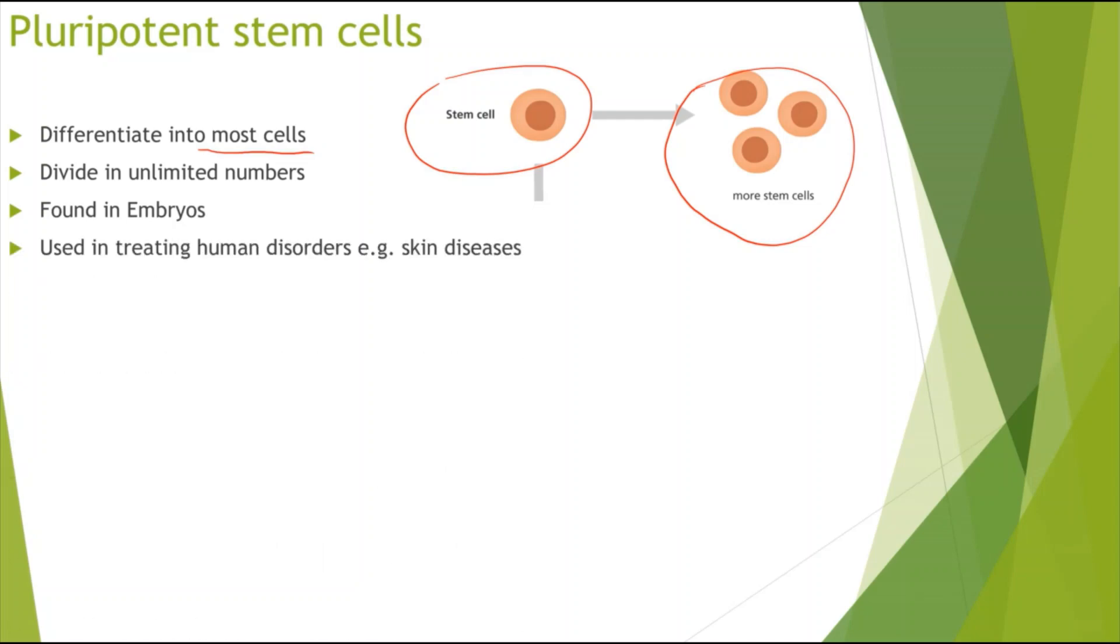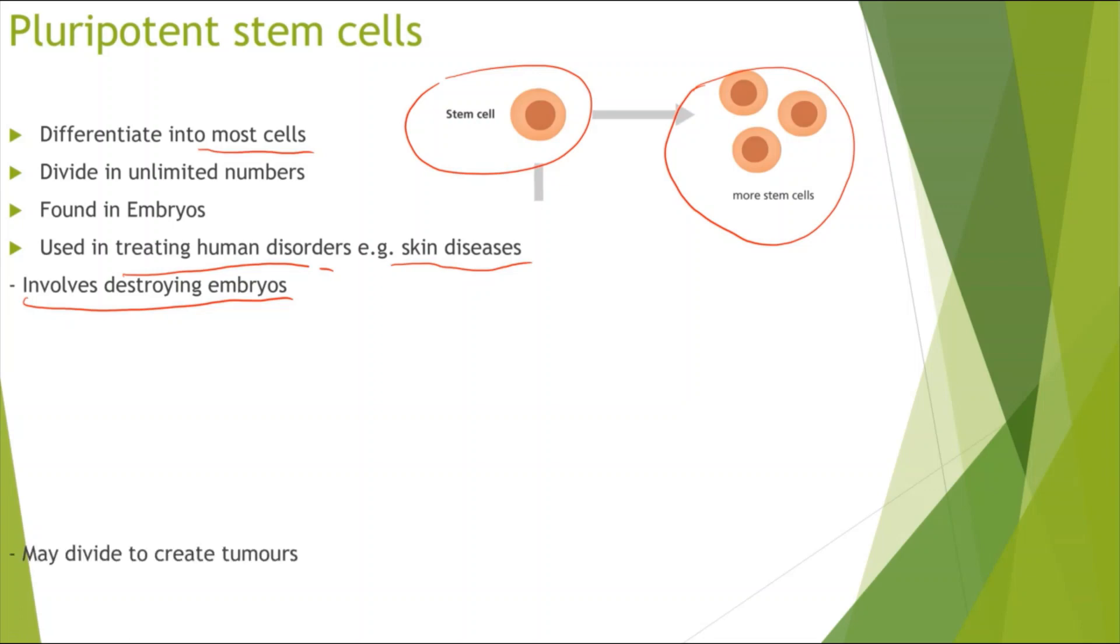And these are quite useful in treating human disorders, so for example skin diseases. So if you have a burnt skin you might be able to use these pluripotent stem cells to regenerate the cells of the skin. There are a few downsides to these pluripotent stem cells, such as these involve destroying embryos. So when we are done with our treatment the leftover embryo would be destroyed. Now this is very unethical because this is potentially killing a baby or taking a life. Now also these stem cells may keep dividing and may divide uncontrollably so they may lead to formation of tumors.